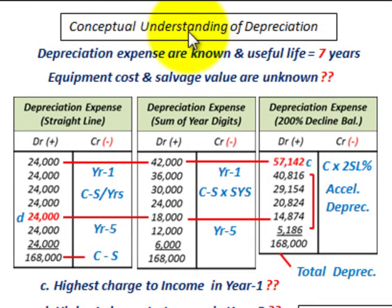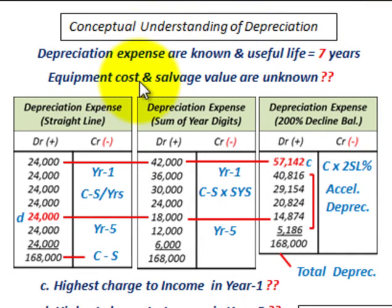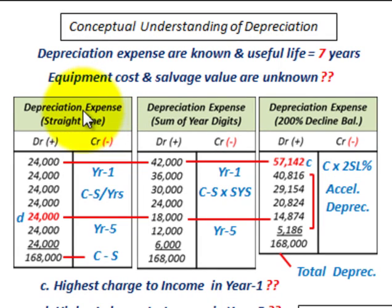What we're going to be going over here is a conceptual understanding of depreciation. This company has a piece of equipment with a seven-year useful life, and we're given the depreciation expense for each of those seven years. What we don't know is the equipment cost and the salvage value — those are unknown. We're given the depreciation expense through three different methods.